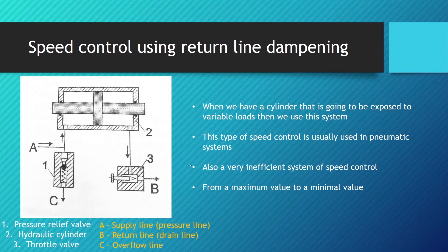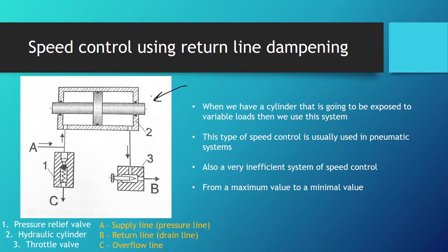When we have variable loads that the cylinder will be exposed to, we use a system where damping is done on the return line or drain line. We can see that example in the picture here — this is speed control using return line dampening. This type of speed control is usually used in pneumatic systems, and it is also a very inefficient system that operates from a maximum value to a minimum value.